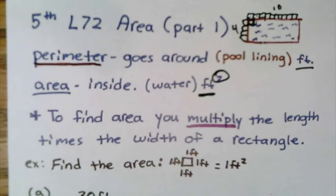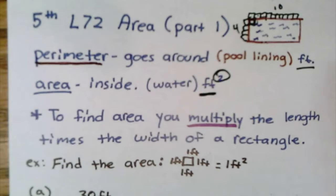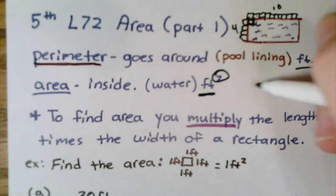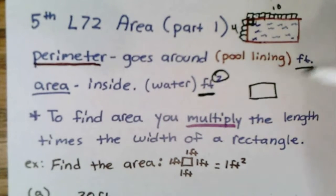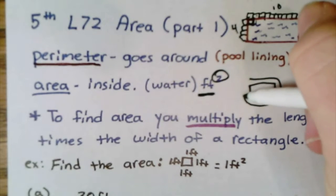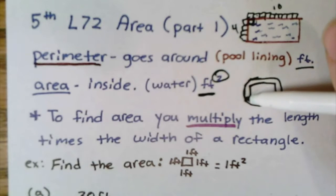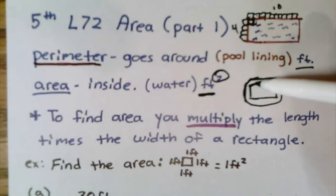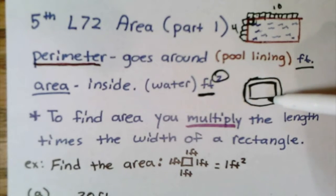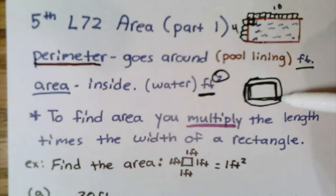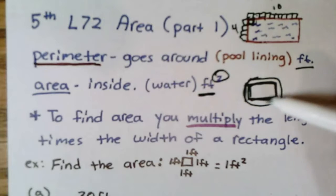Think about a track and a football field. There's a track that goes around the football field. What would we call where the track goes all the way around? Would this be the area or the perimeter? Right, the perimeter. And the inside—the football field—would be the area.